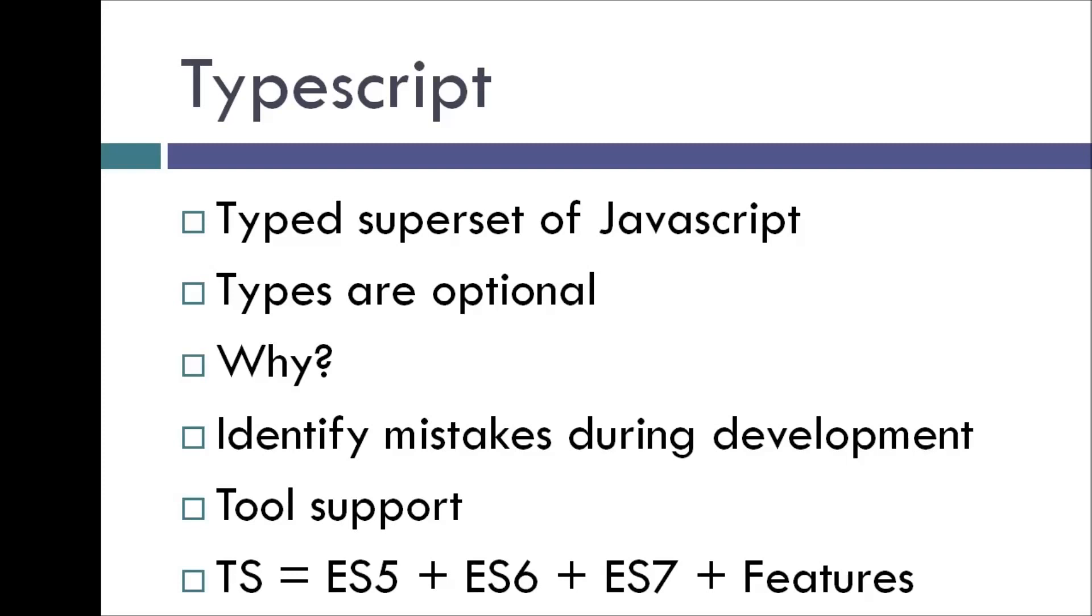Sometimes we are not sure if the scope of a variable exists or not while using it. Sometimes we assign a string value to an integer variable which was declared with the purpose of having only integer values. Or we might even call a function with mismatched parameters.